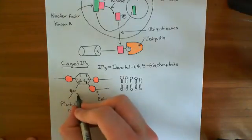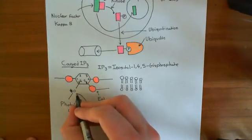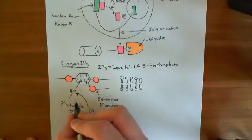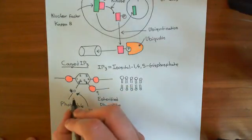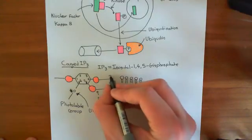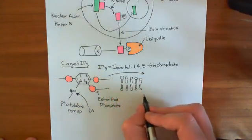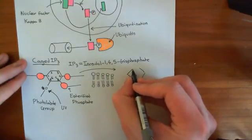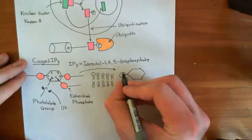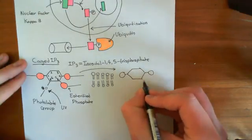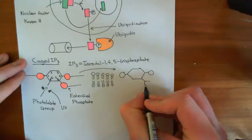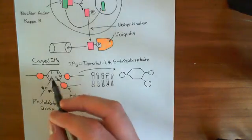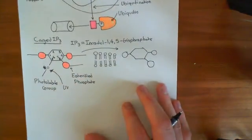Whilst you've got this photolabile group attached to the sixth carbon's hydroxyl group, this is not an active IP3 molecule, even once the ester groups have been removed. The way you can remove this photolabile group is by shining UV light onto the IP3 molecule — that provides the energy needed to hydrolyze that bond, and what you will have is normal IP3: the photolabile group cleaves off, leaving inositol-1,4,5-trisphosphate. That's what is meant by caged IP3, and that's the process of uncaging — shining UV light on and knocking off the photolabile group.